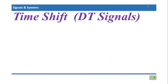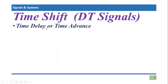In this video tutorial, I'm going to continue my discussion about the time shift operation and extend it from continuous time signals to discrete time signals. Since we are talking about time shift, there will be two possibilities: one is known as time delay, where the signal will be delayed in time, or the signal will have an advanced version of itself in time.